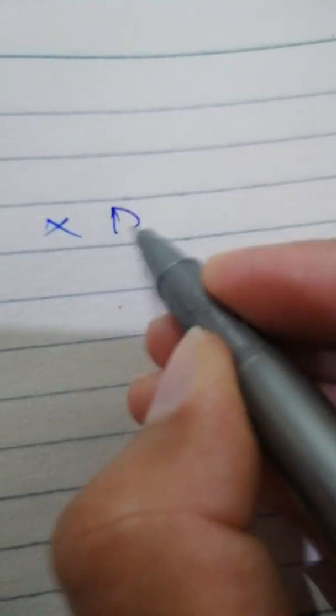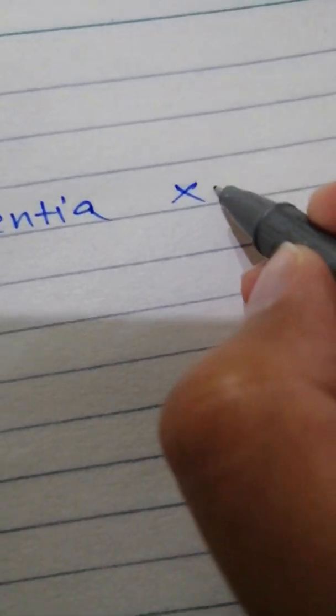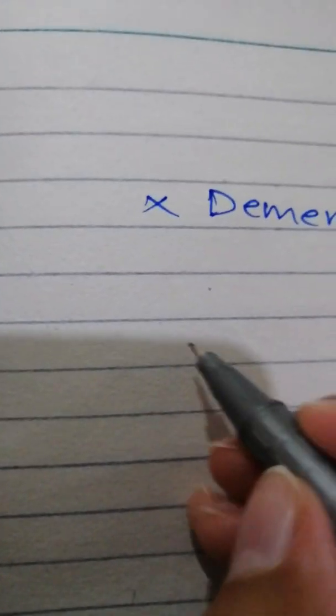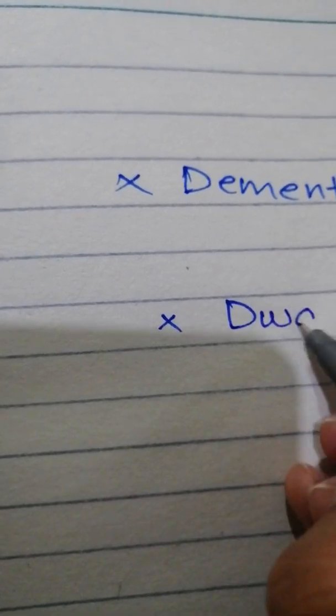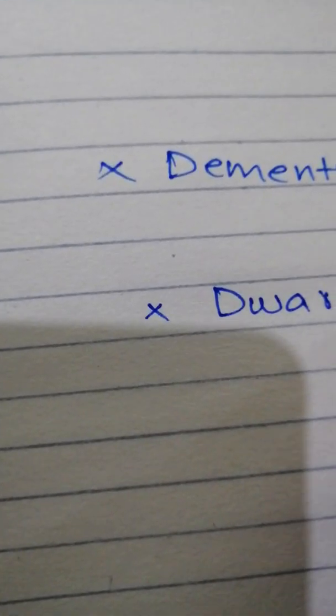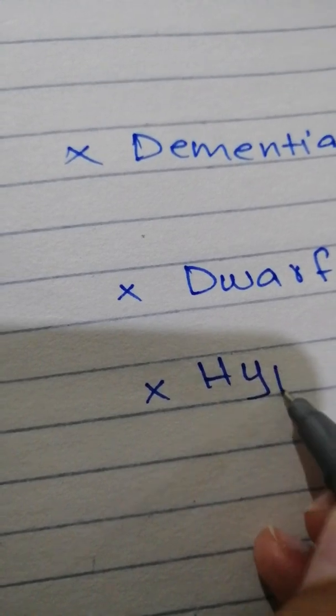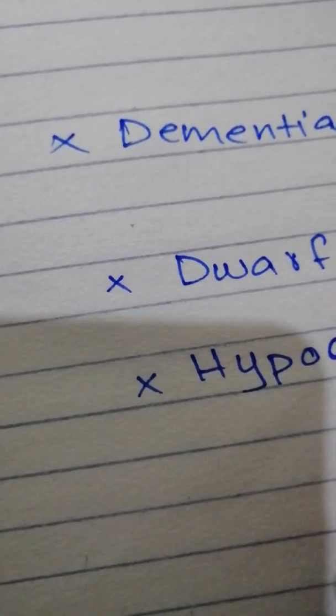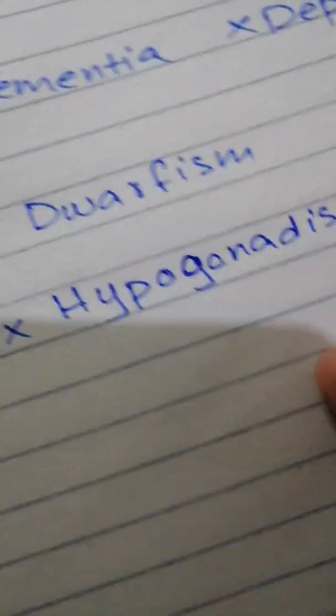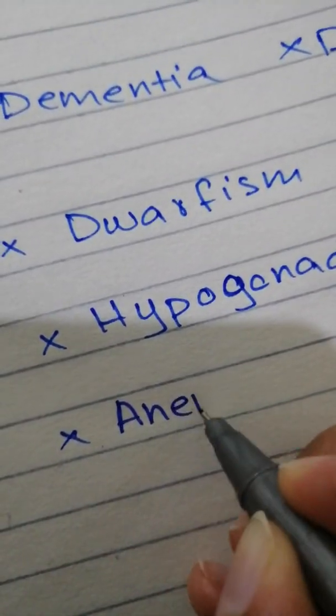We talk about the consequences of deficiencies. There are psychiatric consequences like dementia and depression. There is also retarded growth leading to dwarfism, hypogonadism, and we have anemia being a consequence.